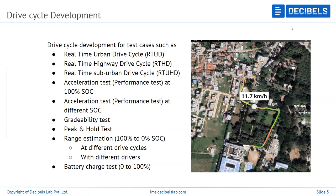Now let's focus more on drive cycle development. The test cases performed include a real-time urban drive cycle, stressing only the urban area. Within a city, you divide it further into moderate traffic, low traffic, and high traffic. You can see the speed profile for each condition. Similar to what you'd see on Google Maps — red indicating high congestion — you perform tests for all such conditions to get a complete picture.